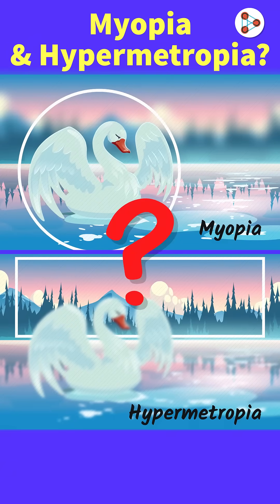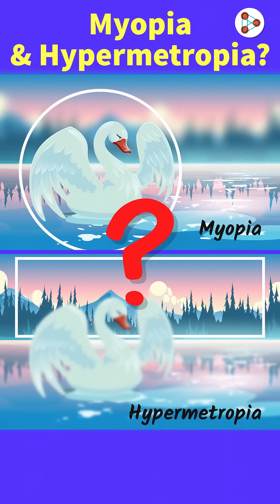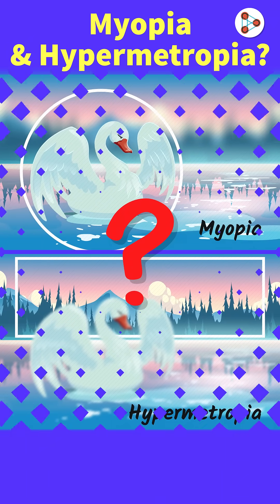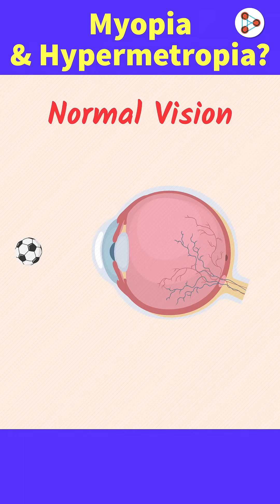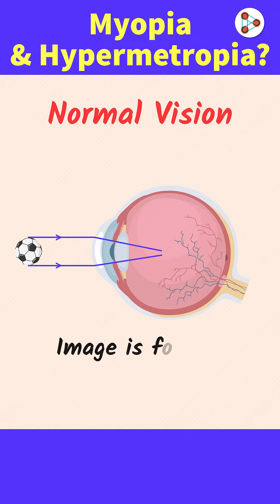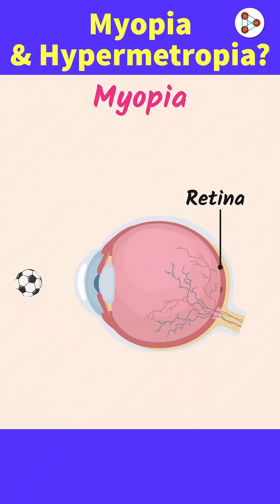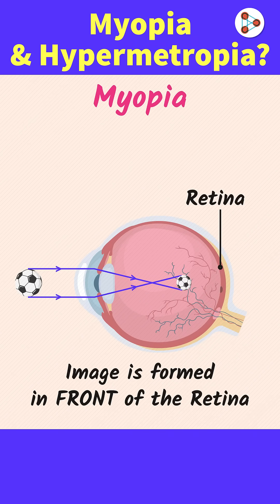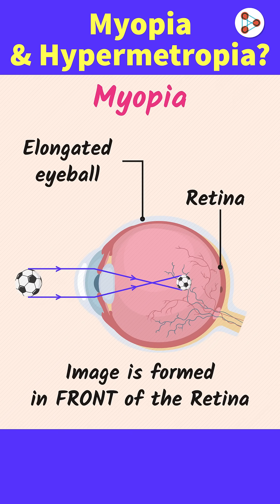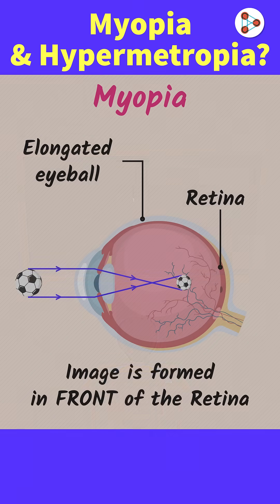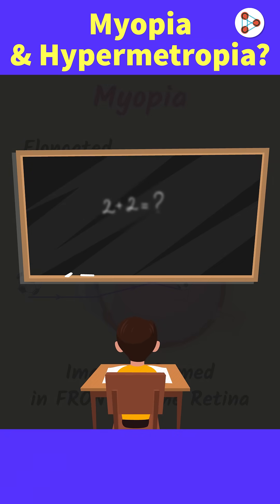But what really happens in the eye in these two cases? When vision is absolutely clear and normal, the image is formed on the retina. When a person has myopia, the image is formed in front of the retina. This could be because of elongation of the eyeball. A student who isn't able to see the blackboard, for example, is suffering from myopia.